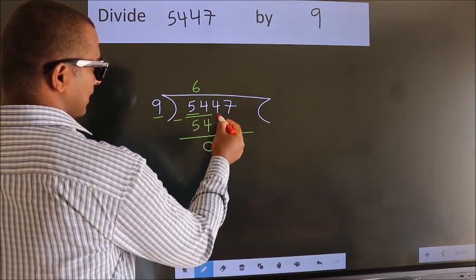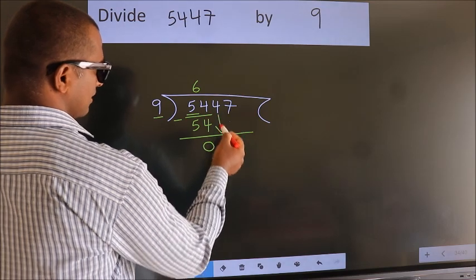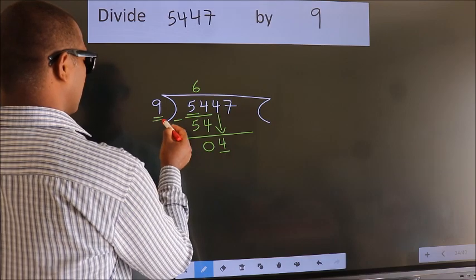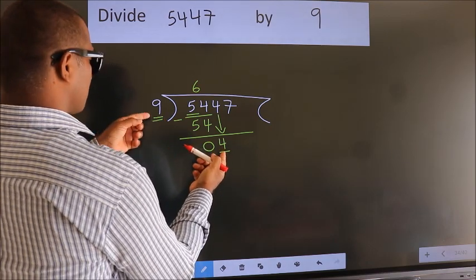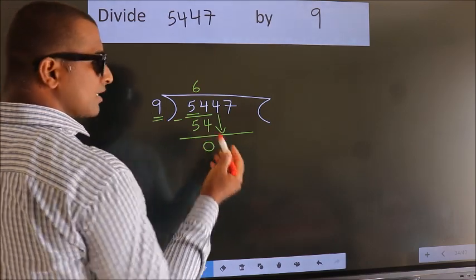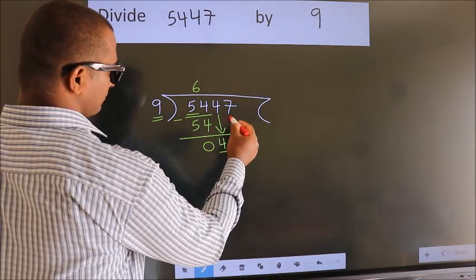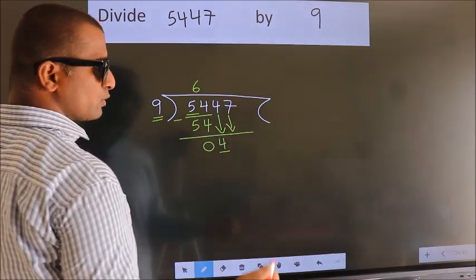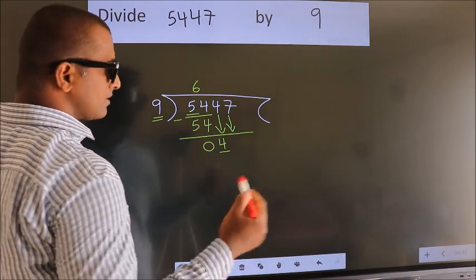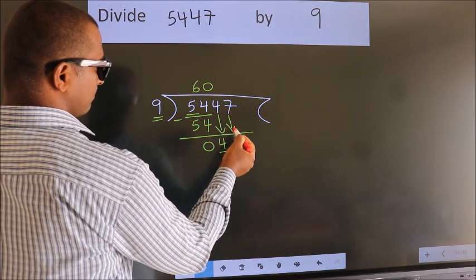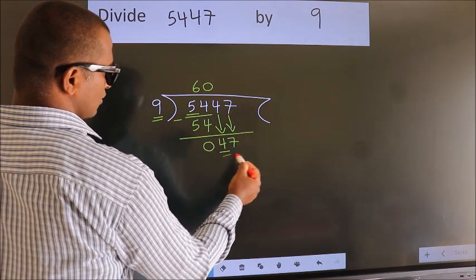After this, bring down the beside number. So 4 down. Here we have 4, here 9. 4 is smaller than 9, so we should bring down the second number. And the rule to bring down the second number is put 0 here. Then only we can bring down this number. So, 47.